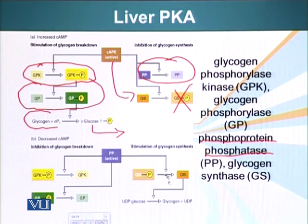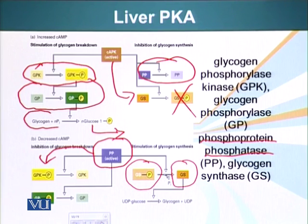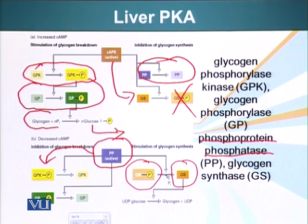Once the PKA response is terminated, PKA becomes inactive. Phosphoprotein phosphatase is no longer suppressed — it removes the phosphate groups from glycogen phosphorylase kinase and glycogen phosphorylase, so they both lose their phosphate groups. It also removes the phosphate group from glycogen synthase, making glycogen synthase active again. Now glycogen synthase will start adding glucose molecules to glycogen. It is very important that cells are not doing things which are counterproductive — on one hand degrading glycogen while another system is making glycogen. This is how the system works very beautifully in response to epinephrine in the environment.